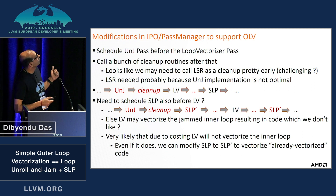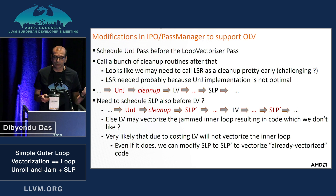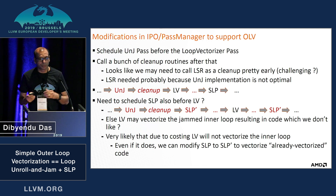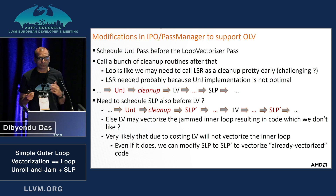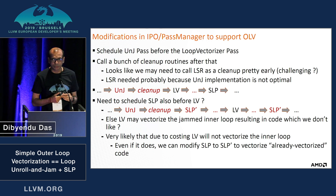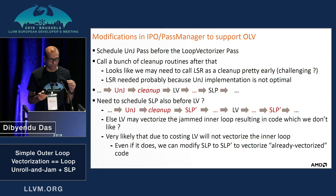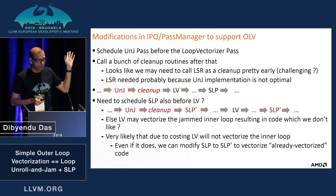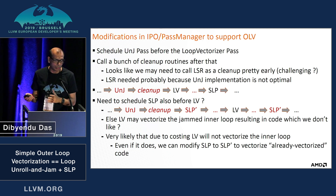What we did was: first, we made the scheduled unroll-and-jam actually move before the loop vectorizer phase. We can make it live between the loop vectorizer and SLP, but we moved it up outside the loop vectorizer phase. Then we had to call a bunch of cleanup routines to make sure it really works, mainly because the unroll-and-jam pass is not fully tuned for some of these cases. So the flow is: unroll-and-jam, cleanup, loop vectorization, then SLP.